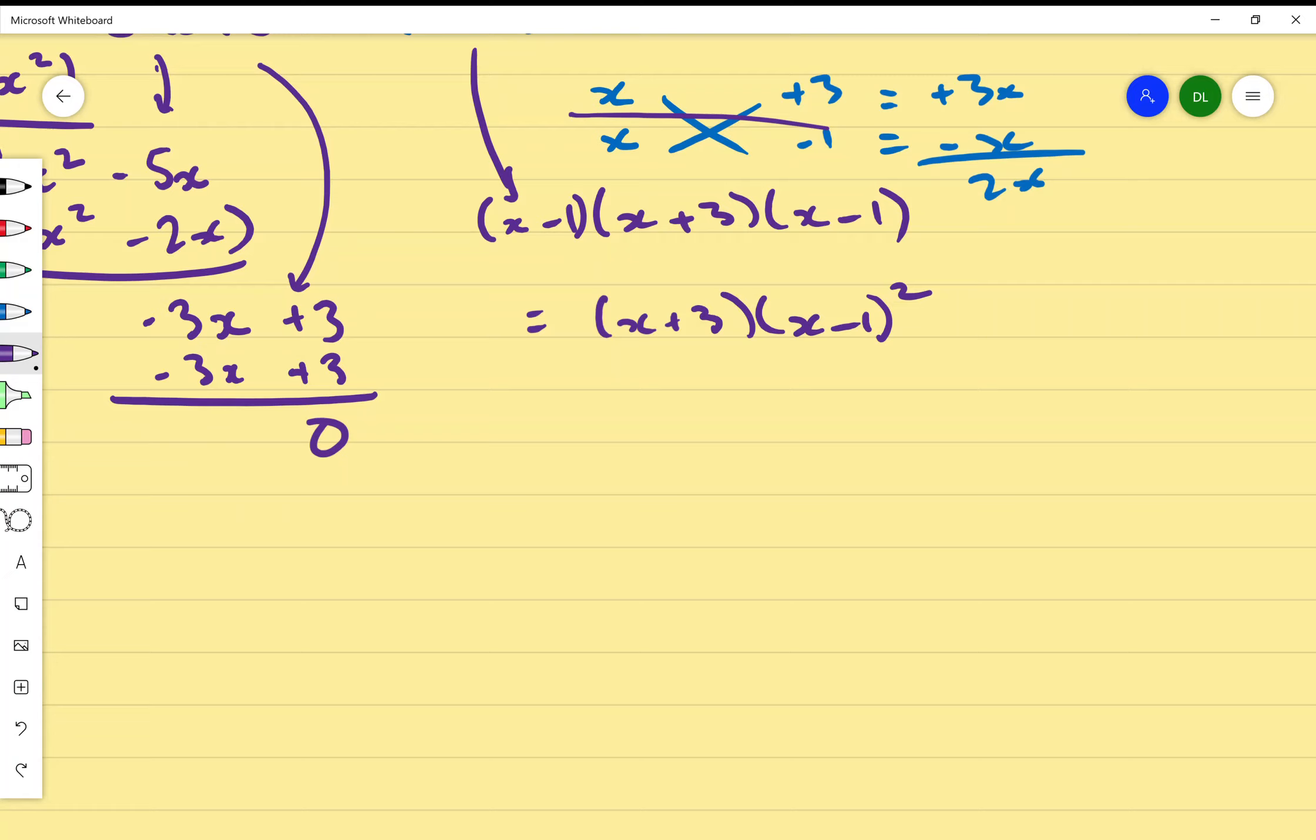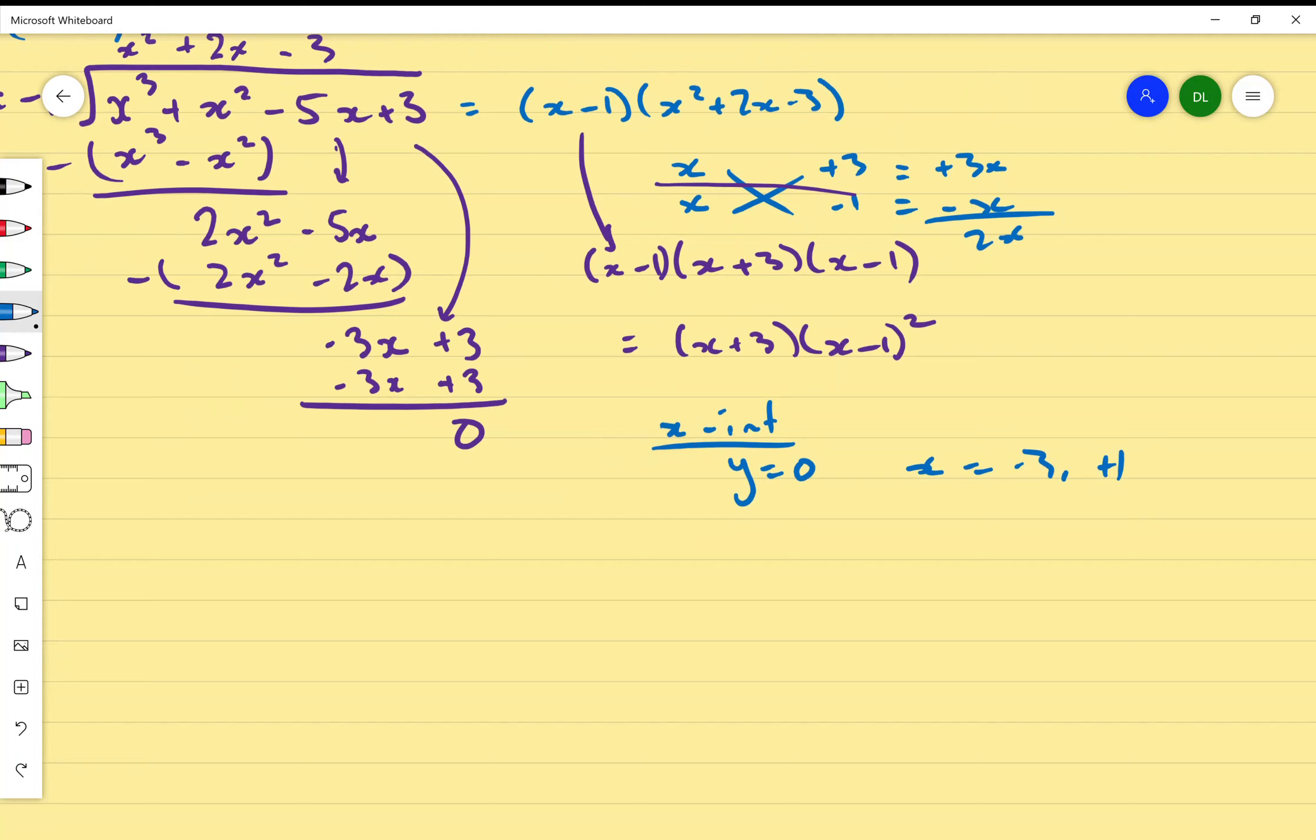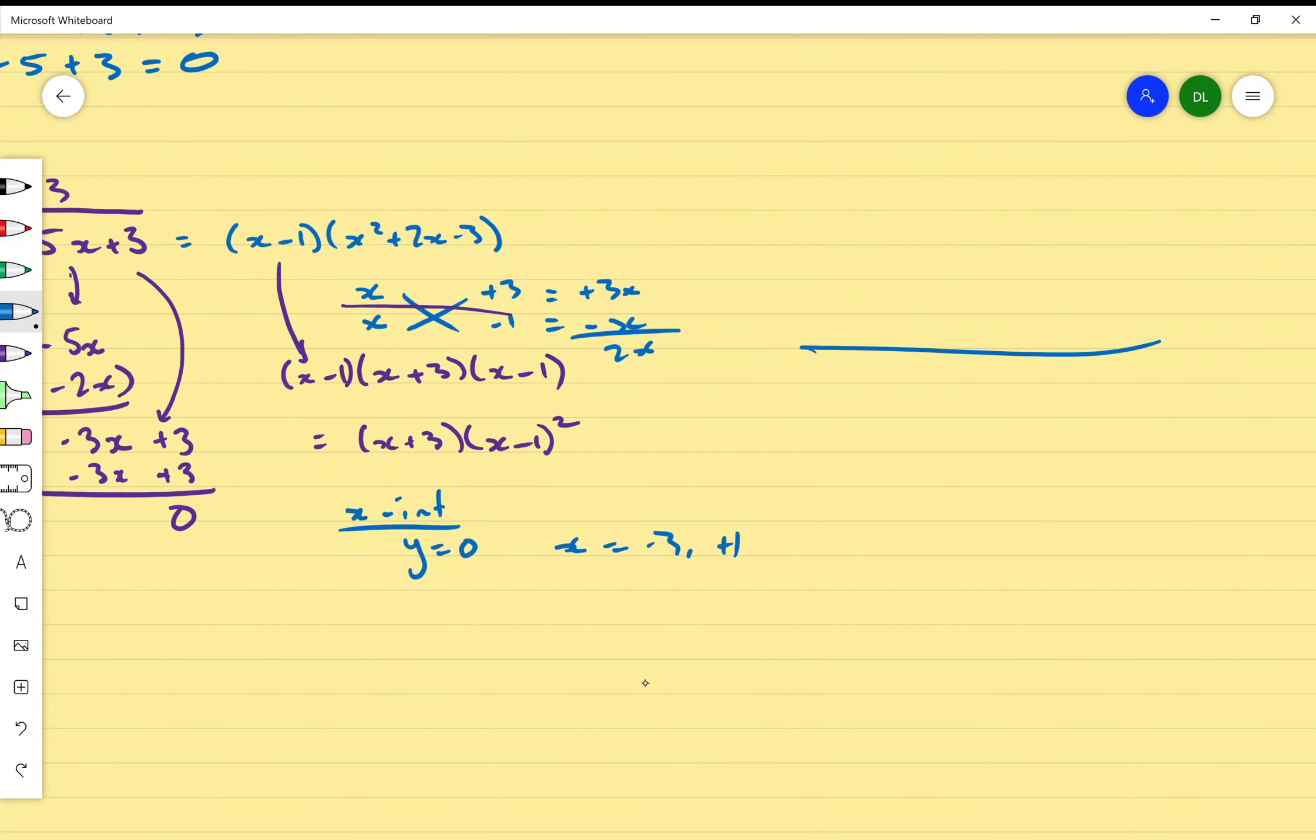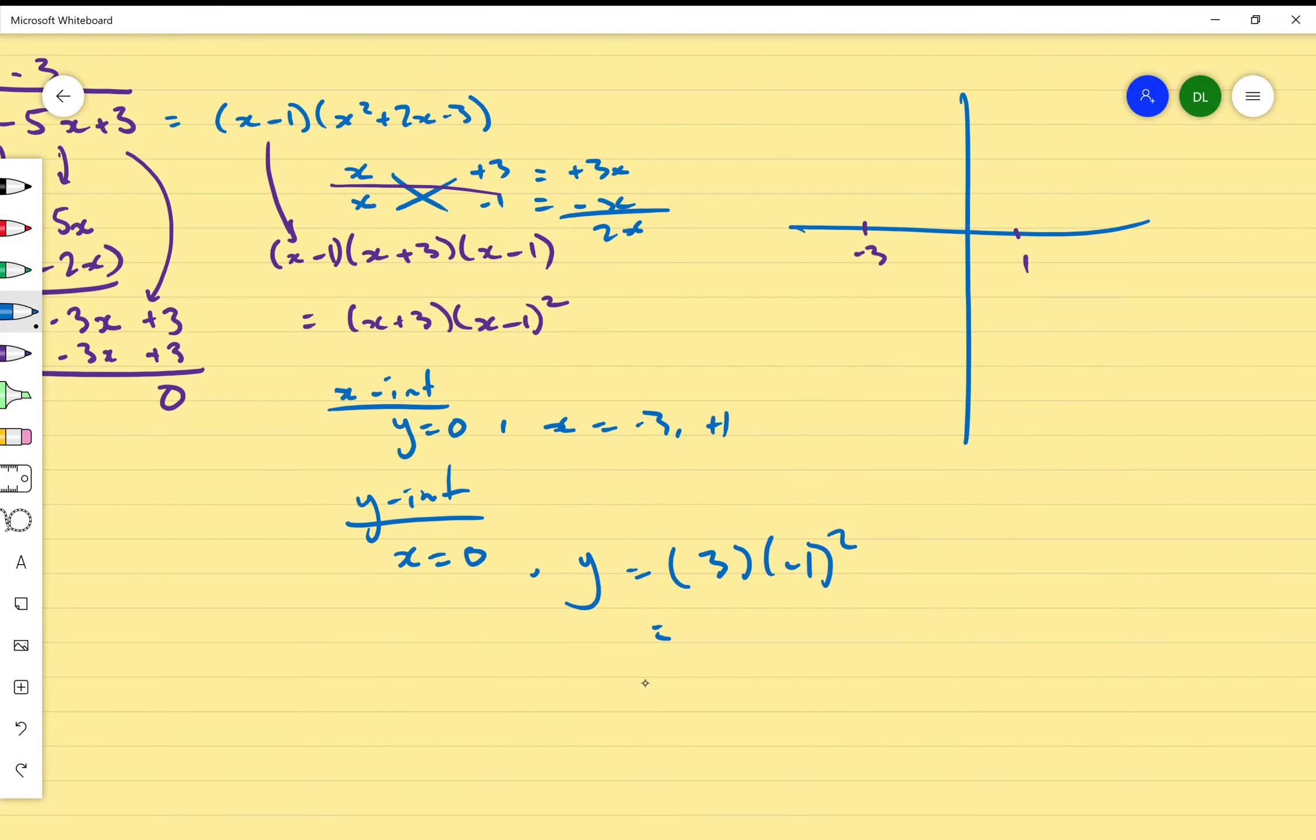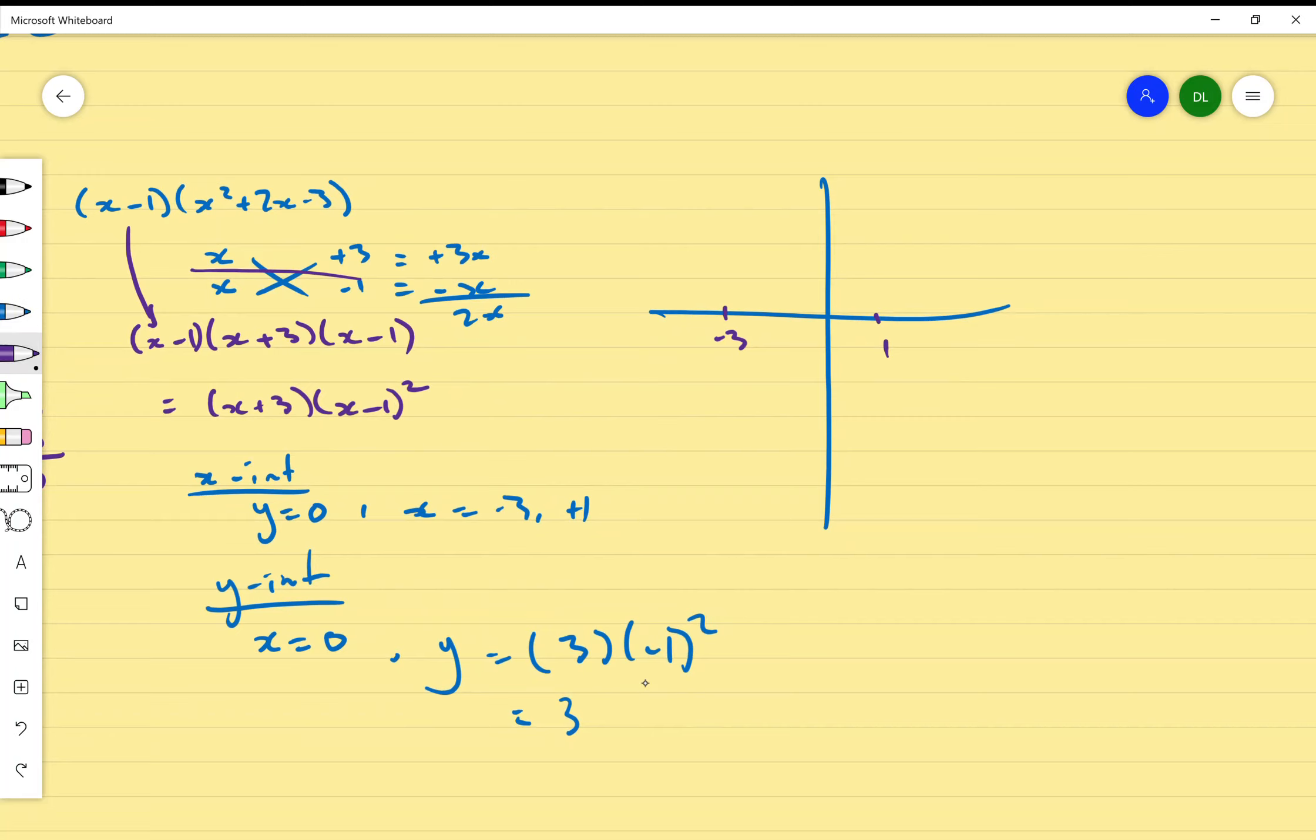Hopefully you remember from last lesson about how repeated factors look in a graphical sense. I'm going to quickly graph this because off the bat I can tell that my x intercepts are, when y equals 0, I get x equals negative 3 and positive 1. I'm going to graph that very roughly on the right hand side. So I get negative 3, let's put that there, and positive 1. Let's find my y intercept. So my y intercept I let x equal to 0, and I'm going to use this equation. So I get y equals 3 bracket and then negative 1 squared. 3 times negative 1 squared gives me just 3.